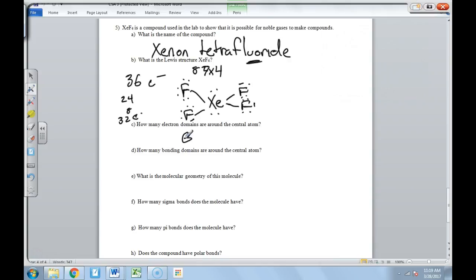How many electron domains are around that central atom? There are definitely still six, but now there's only four bonding domains. There's one, two, three, four, five, six electron domains. And then one, two, three, four of them have bonds in them, bonding domains. The geometry is directly related to how many electron domains and how many bonding domains. The molecular geometry for this is going to be square planar.